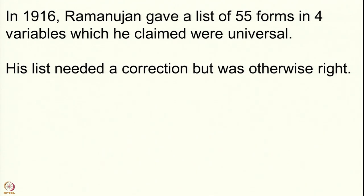When a person like Ramanujan makes a mistake like this, a natural question arises: how do you determine that some form is universal? Already Lagrange's theorem took considerable effort to prove, and proving that all 54 remaining forms are universal is not easy, and one is prone to making mistakes.